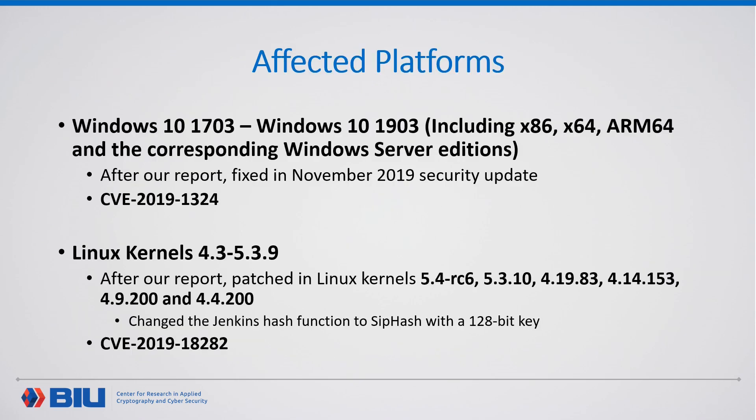The affected platforms are Windows 10 versions 1703–1903, and it was fixed in the November 2019 security update. For Linux and Android, Linux kernels 4.3–5.3.9 are vulnerable, and the fix was to move to SipHash with a 128-bit key.